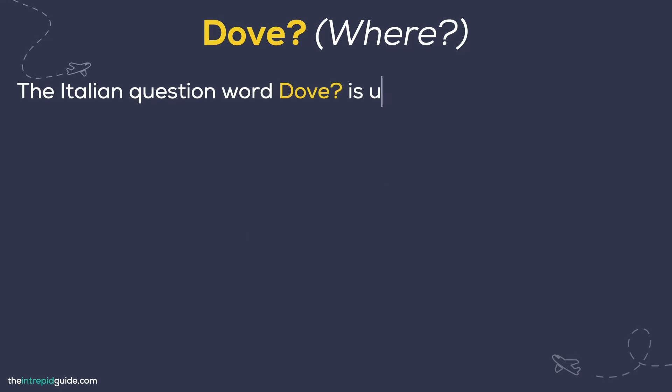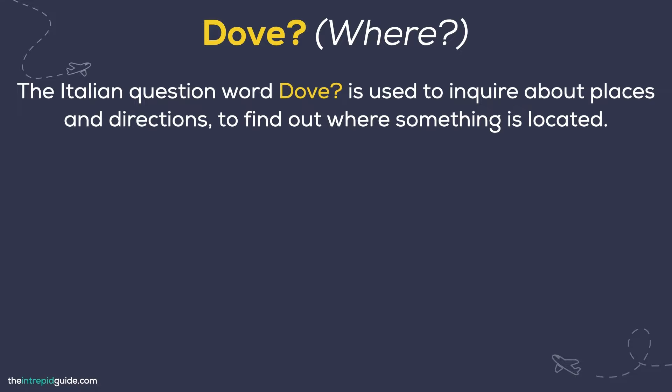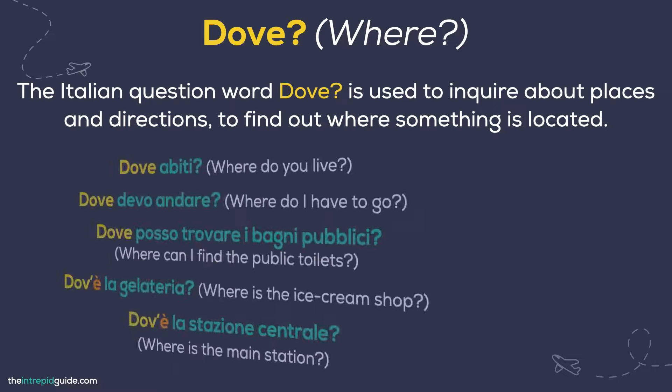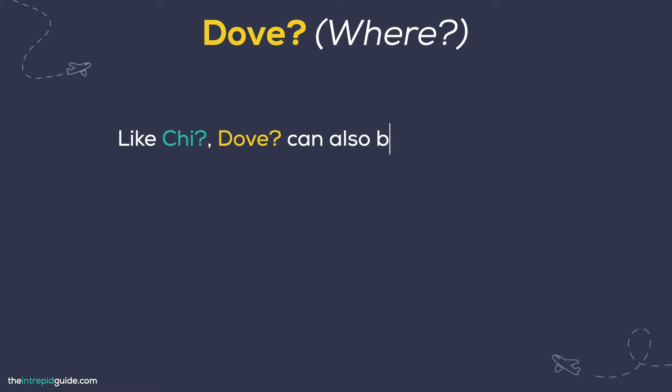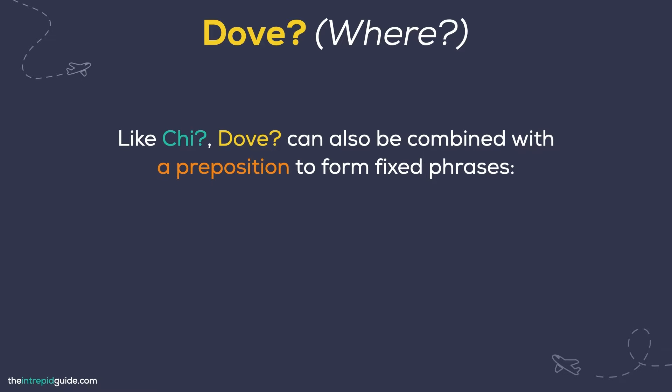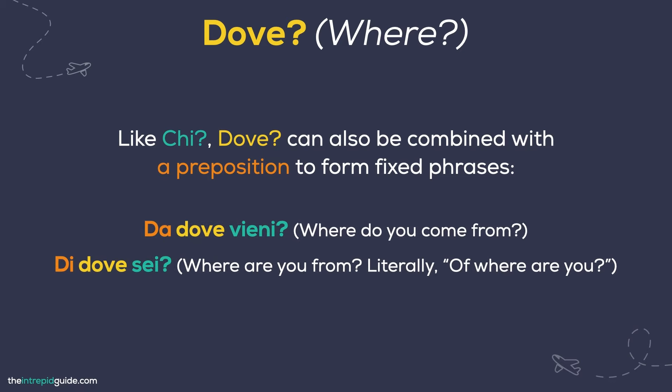The question word Dove is used to inquire about places and directions to find out where something is located. For example: Dove abiti? Where do you live? Dove devo andare? Where do I have to go? Dove posso trovare i bagni pubblici? Where can I find the public toilets? Dov'è la gelateria? Where is the ice cream shop? Dov'è la stazione centrale? Where is the main station? As you can see, when the third person singular of the verb essere — è — is used, it combines with dove and we add an apostrophe, so it becomes dov', similar to the English it's. Like chi, dove can also be combined with a preposition to form fixed phrases: Da dove vieni? Where do you come from? Di dove sei? Where are you from? Literally, of where are you?